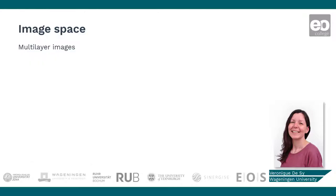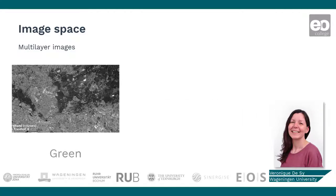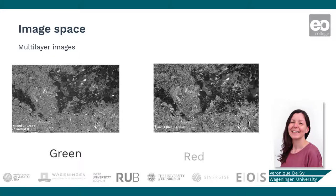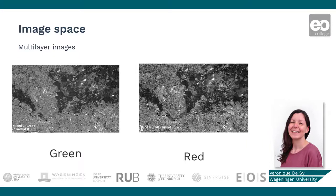The image space can consist of multi-layer images. For example, Landsat 8 measures in 9 bands, each measuring the reflectance in a different wavelength spectrum. On the right, the image space of the red reflectance, band 4, is shown with very similar reflectance values as in the green spectrum.